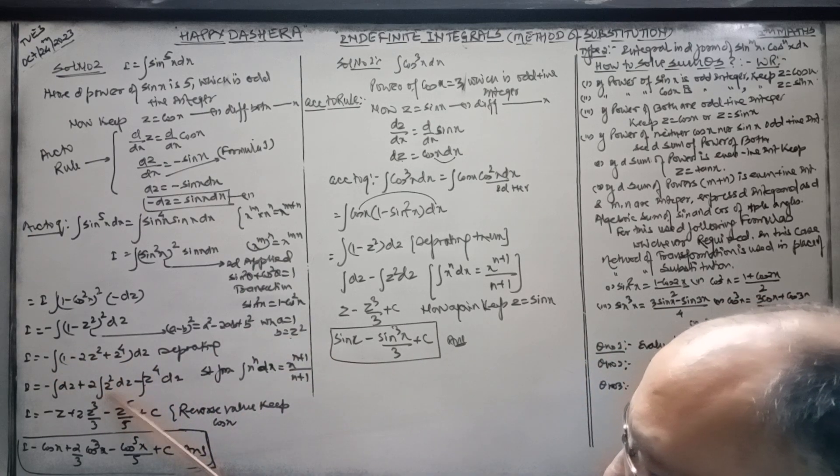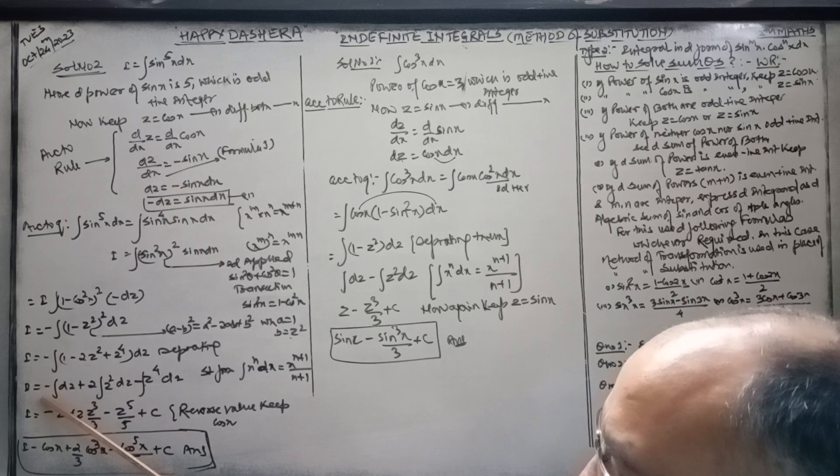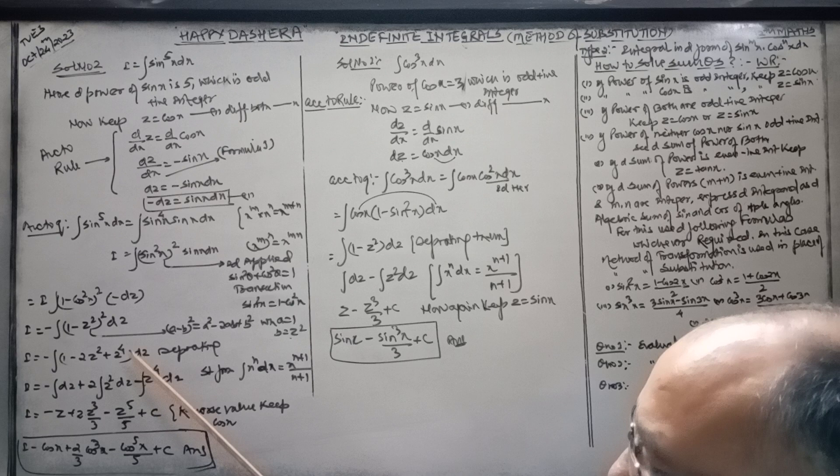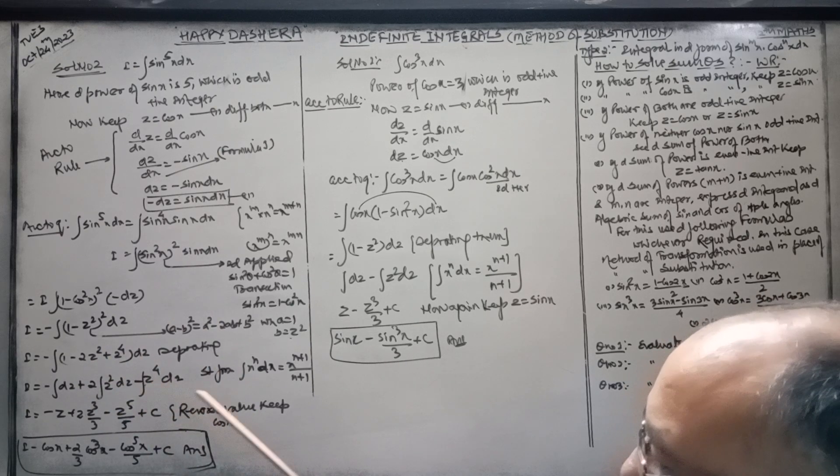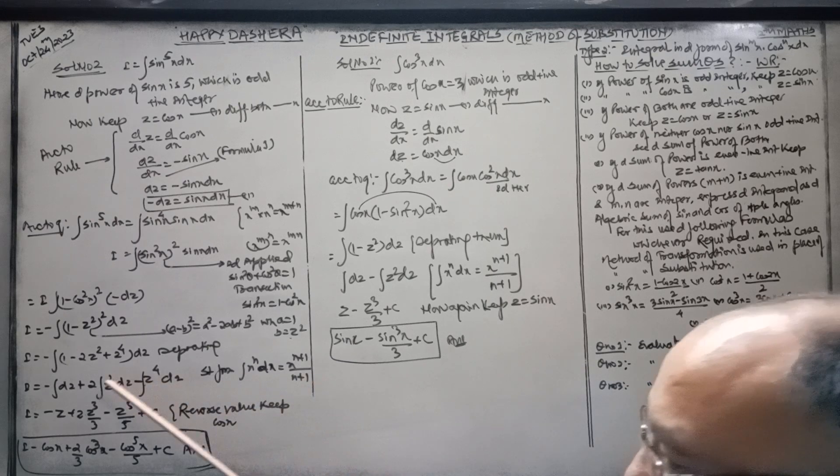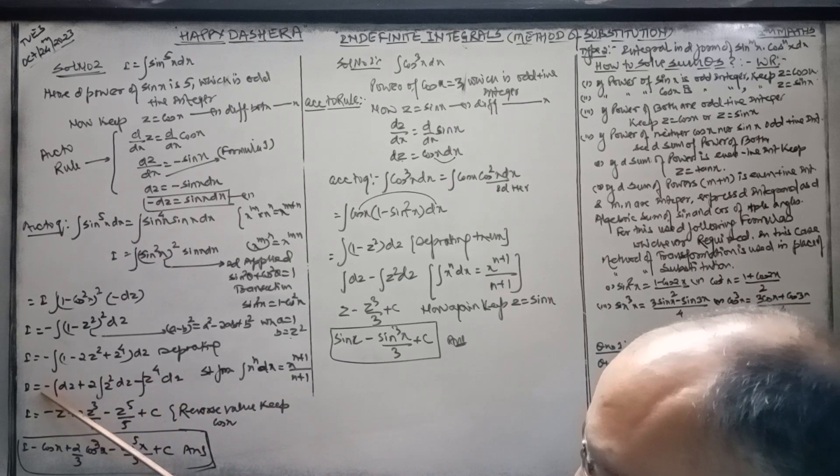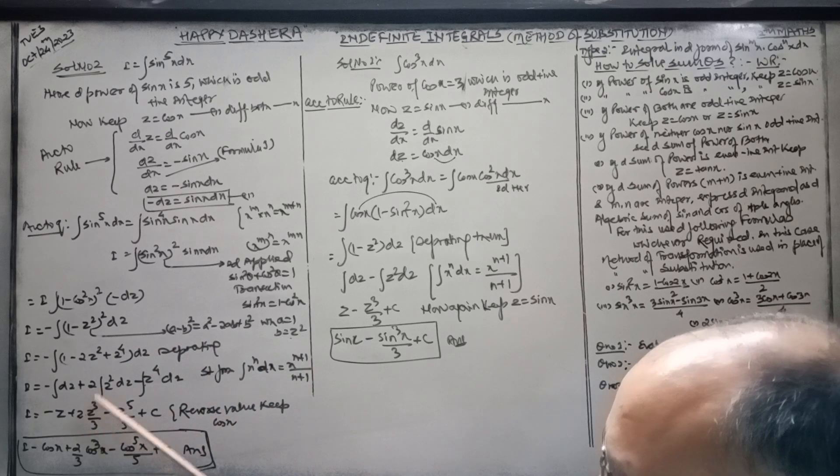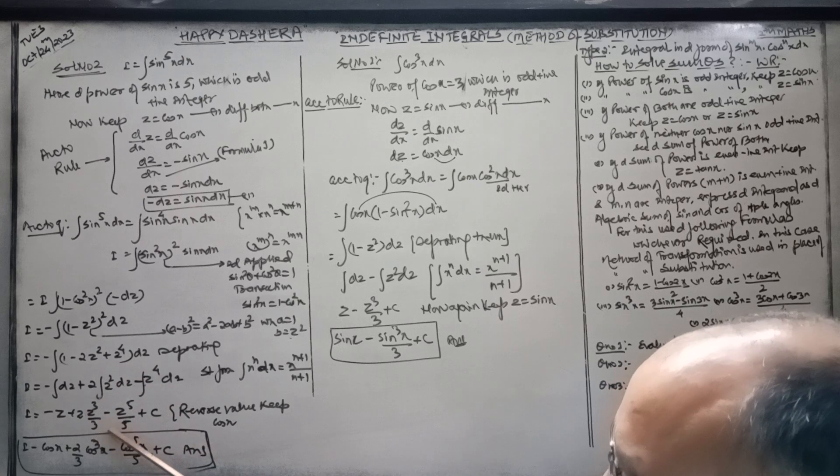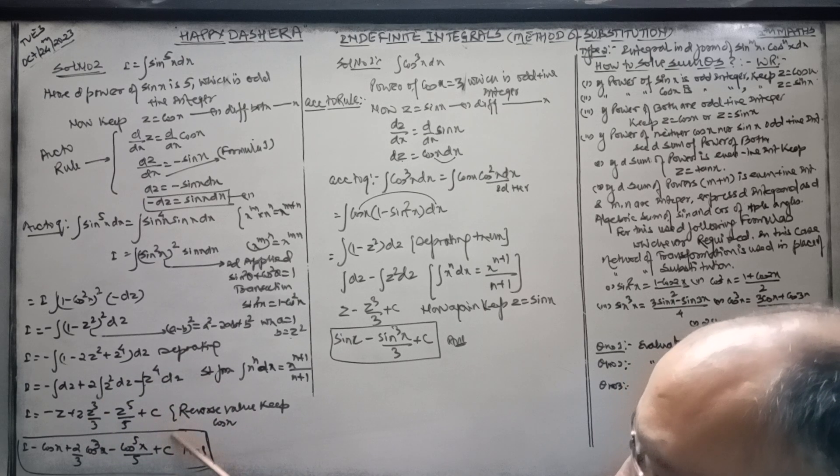Now, separating as well. Using x^n plus 1 over n plus 1. 2 into z to power 2 plus 1 upon 2 plus 1 minus z to power 4 plus 1 upon 4 plus 1 plus c.